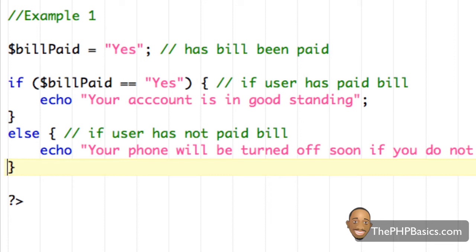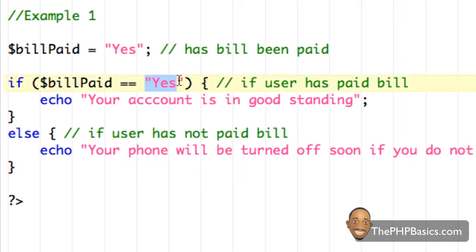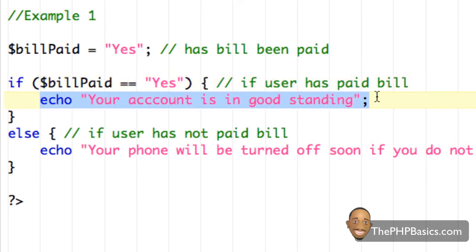Let's re-evaluate what's going on here. First, I created a variable called bill_paid and assigned the string "Yes" to it. Then in the if statement, we evaluate whether bill_paid is equal to "Yes" — basically whether the person has paid their bill. I'm comparing the string inside the variable, which is "Yes", to the string "Yes". They match, so this condition is true, and we execute the echo statement inside the if block.